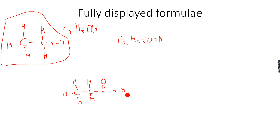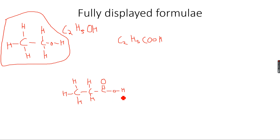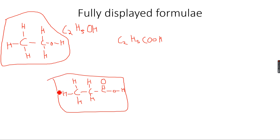This is the fully displayed formula of propanoic acid because I've shown all the carbon-hydrogen bonds, the carbon-carbon bonds, the carbon-oxygen double bond, the carbon-oxygen single bond, and the oxygen-hydrogen bond. This is called the fully displayed formula because I'm showing all the bonds.